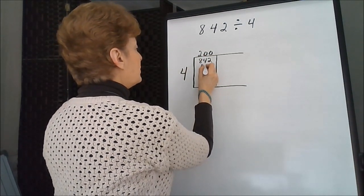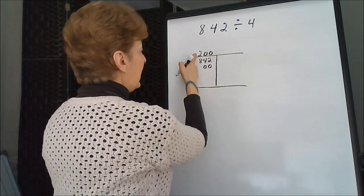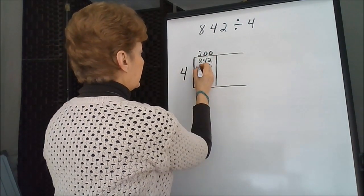Multiply it back out. We have the two zeros here for the zeros of the 200. And then 2 times 4 is 8.